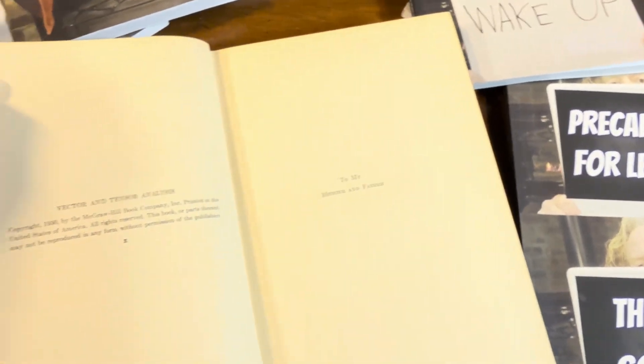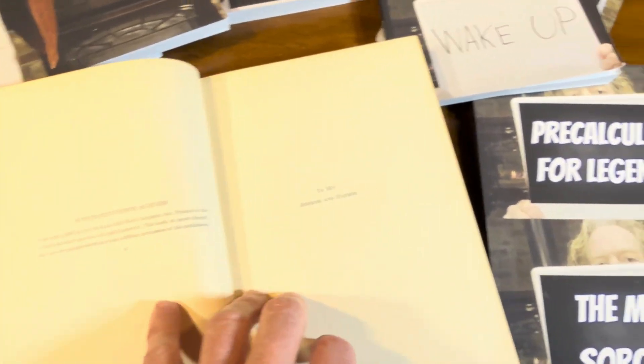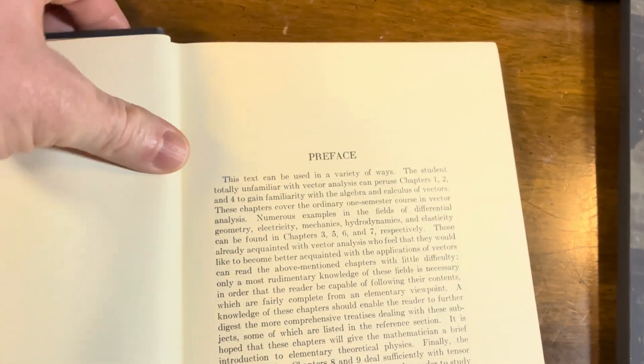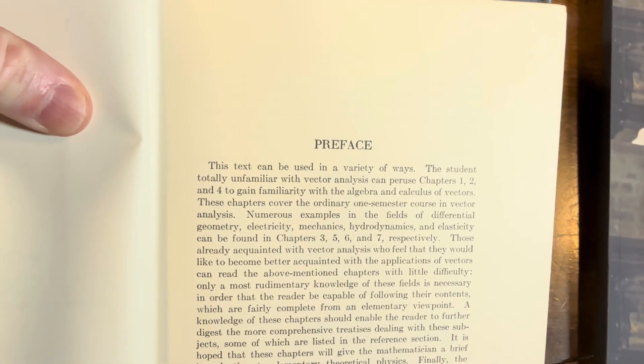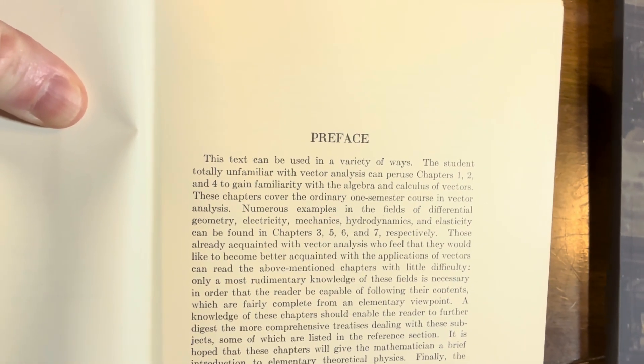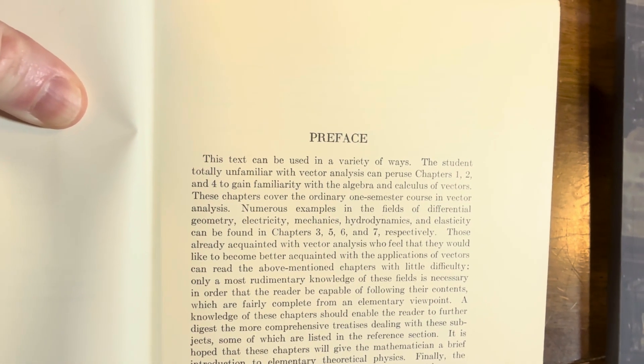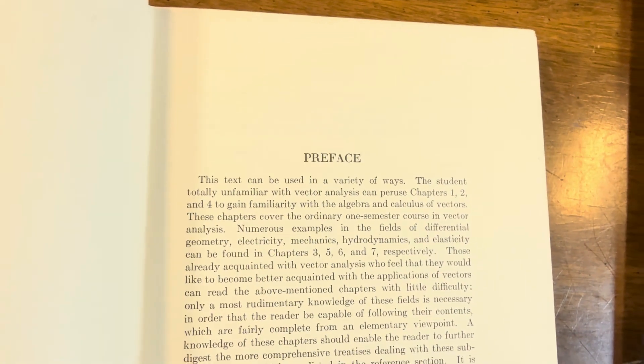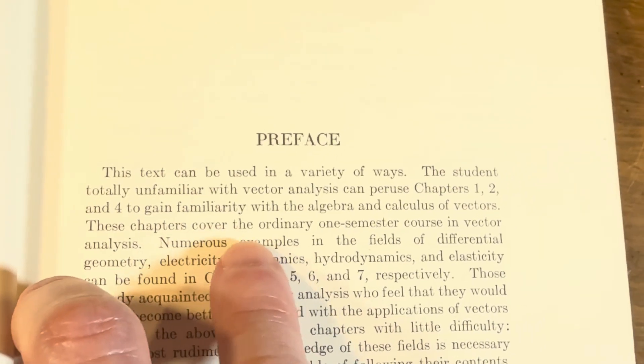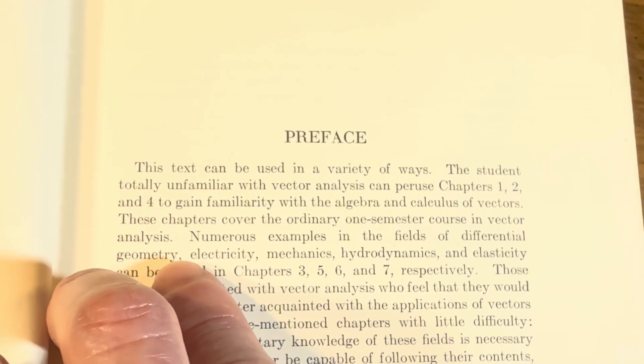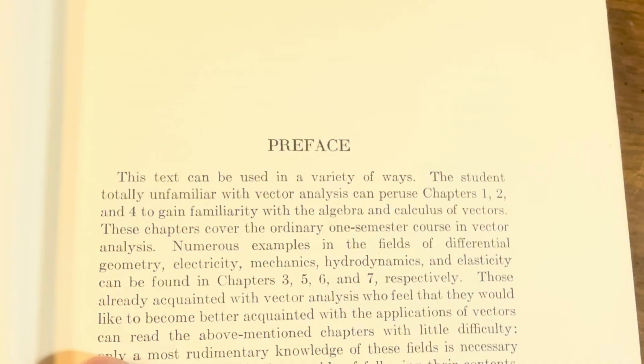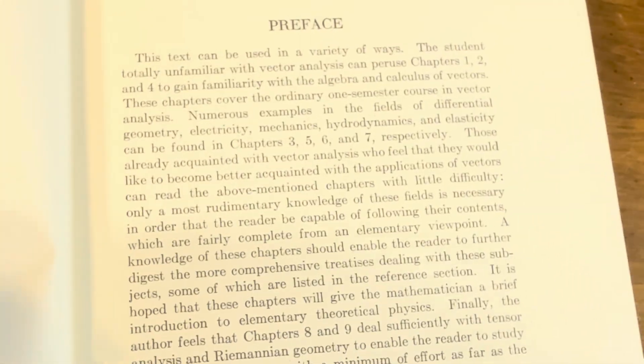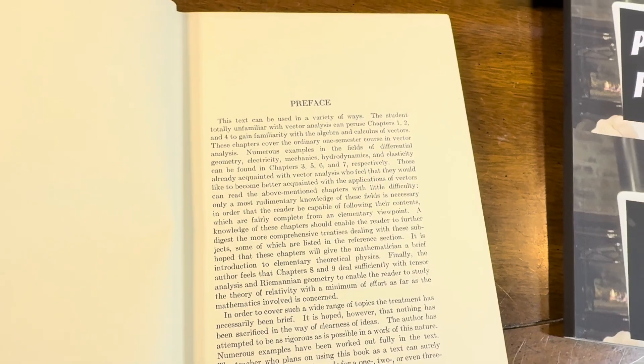Take a look at the topic. So this is a course you could take as an undergrad. Let's see what it says here. This text can be used in a variety of ways. The student totally unfamiliar with vector analysis can peruse chapters one, two, and four to gain familiarity with the algebra and calculus of vectors. These chapters cover the ordinary one semester course in vector analysis. Cool. So there's different ways to use it, probably because it has so much content.